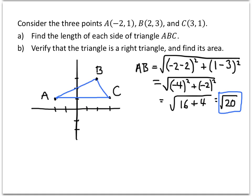Similarly, we can find the lengths of the other two sides. The distance from A to C works out to be 5, and the distance from B to C works out to be the square root of 5. Check those on your own to make sure you can get those answers.